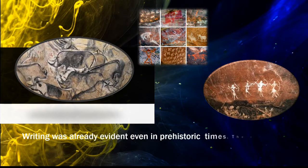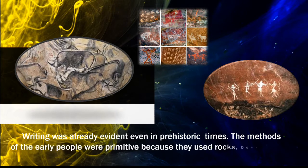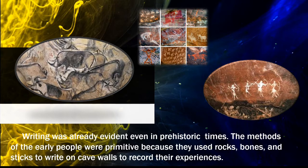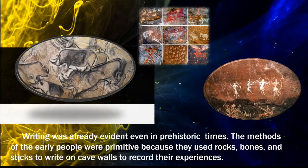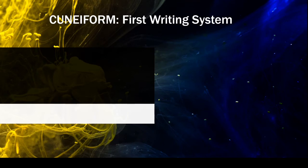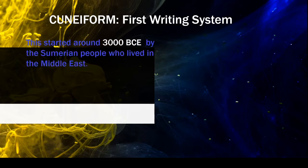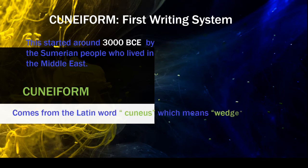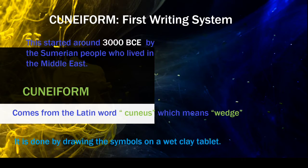Writing was already evident even in prehistoric times. The methods of the early people were primitive because they used rocks, bones, and sticks to write on cave walls to record their experiences. The first writing system was cuneiform, which started around 3000 BCE by the Sumerian people who lived in the Middle East. Cuneiform comes from the Latin word cuneus, which means wedge. It is done by drawing the symbols on a wet clay tablet.